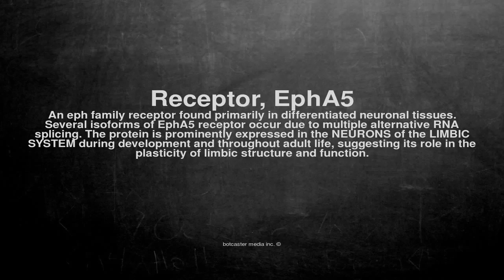Several isoforms of the ePHA5 receptor occur due to multiple alternative RNA splicing. The protein is prominently expressed in the neurons of the limbic system during development and throughout adult life, suggesting its role in the plasticity of limbic structure and function.